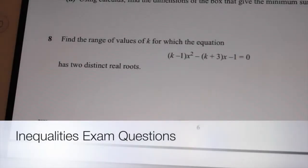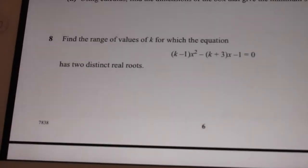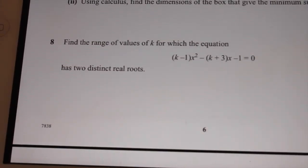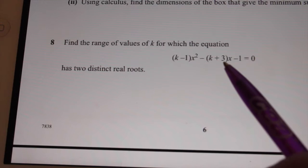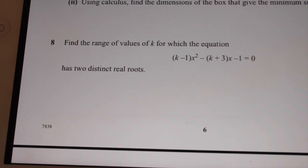I'm going to have a look at June 2013, question 8. Find the range of values for which this equation has two distinct real roots. Whenever you see real roots, that tells you discriminant is greater than 0. So b squared minus 4 times a times c is greater than 0.